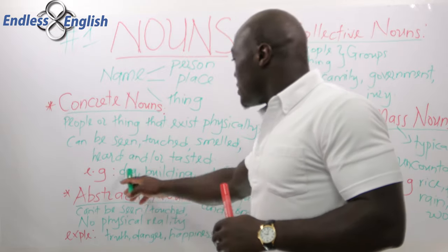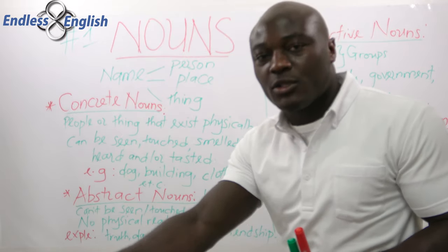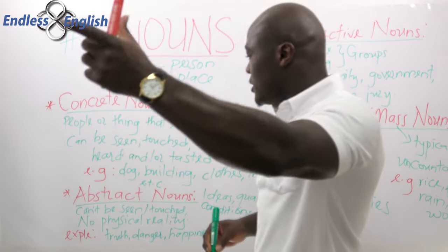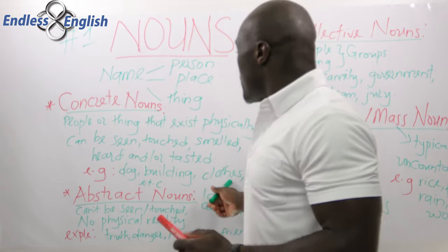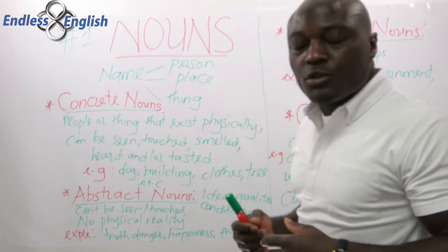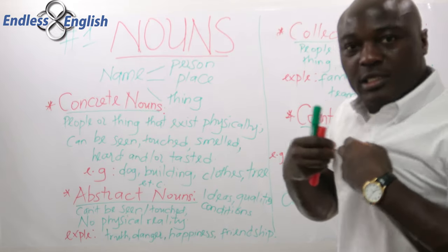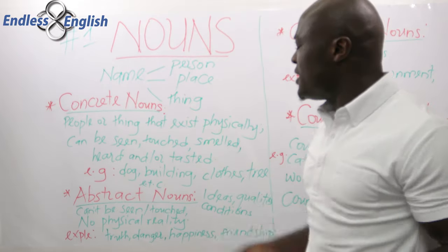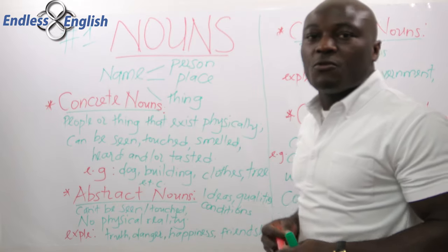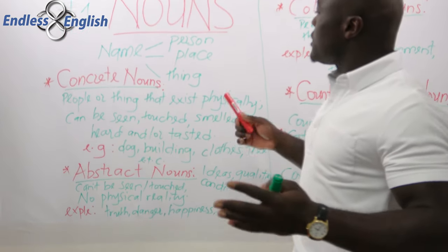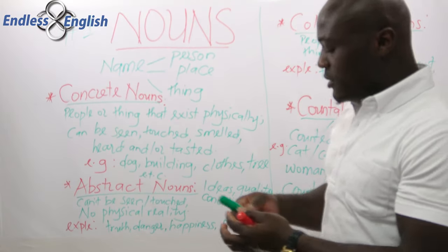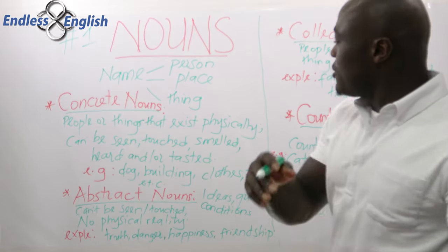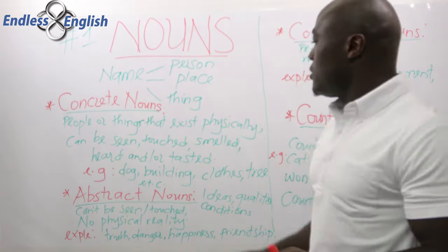For example, a dog is something you can touch. A building is something you can feel, touch, and see. Clothes — like the t-shirt I'm wearing — you can actually see and touch. A tree is also a concrete noun. So concrete nouns are people and things that exist physically and can be seen, touched, or smelled.